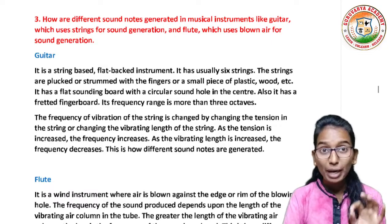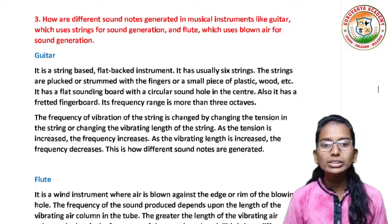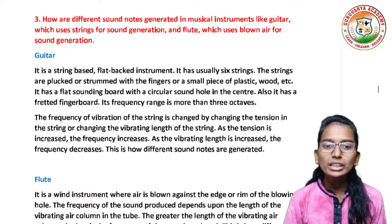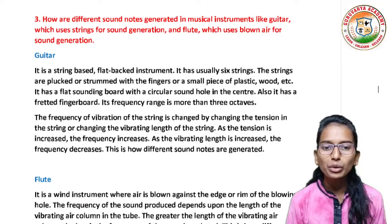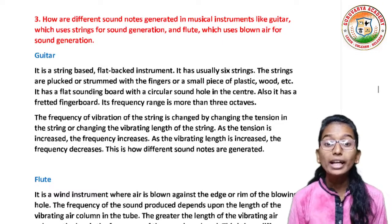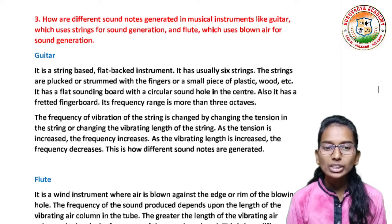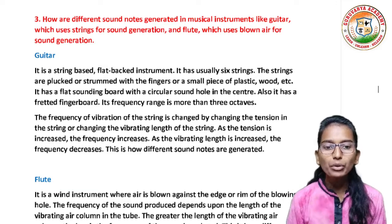Firstly, we will talk about the guitar. It is a string-based flat-back instrument. It has usually six strings. The strings are plucked or strummed with the fingers or a small piece of plastic, wood, etc. It has a flat sounding board with a circular sound hole in the center. Also, it has a fretted fingerboard. Its frequency range is more than three octaves. The frequency of vibration of the string is changed by changing the tension in the string or changing the vibrating length of the string. As the tension is increased, the frequency increases. And as the vibrating length increases, the frequency decreases. So this is how different sound notes are generated.